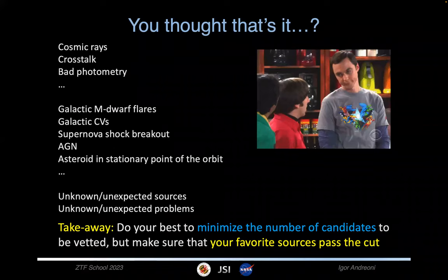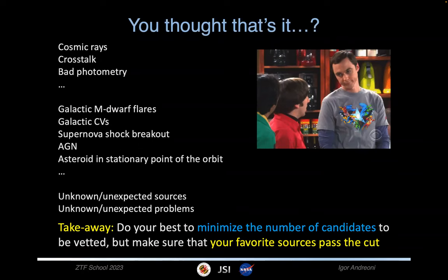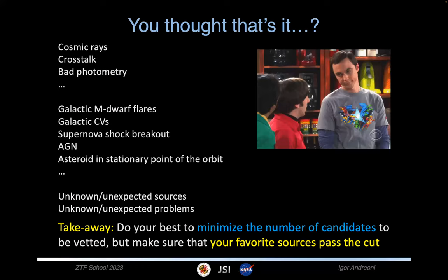You also have real astrophysical sources that fool you into thinking they are of a certain class while they belong to a different class interesting to a different kind of astronomer. This is actually why it's good to make friends who work on different fields. You can mine your data set, hand them what's not precious to you but good for them, be in their paper, learn something new, and expand collaborations — it's only good for you. Keep that in mind; it's a healthy practice.